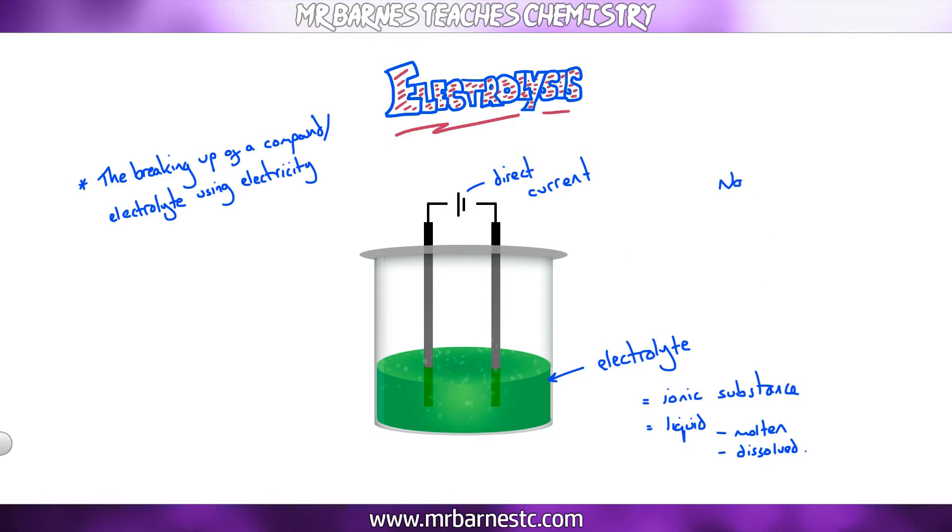If you take an example, NaCl sodium chloride, you have two ions in there: Na+ and Cl-. Therefore it's an ionic substance. When we turn that into a liquid by melting it or dissolving it, those ions become free to move, and it becomes an electrolyte.